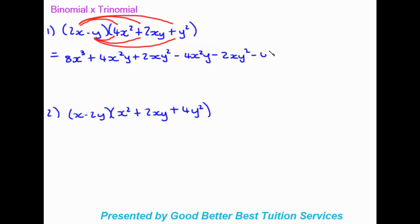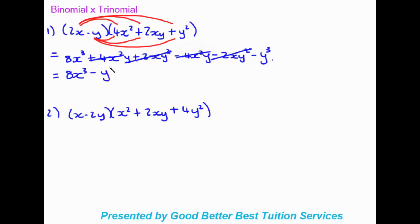Negative y times the last term gives negative y to the power of 3. Now looking for like terms: positive 4x squared y and negative 4x squared y cancel each other out completely. Positive 2xy squared and negative 2xy squared also cancel each other out. All we're left with as our final answer is 8x to the power of 3 minus y to the power of 3. After multiplying out brackets, always look for like terms to simplify further.